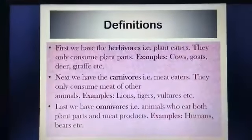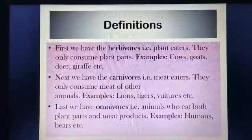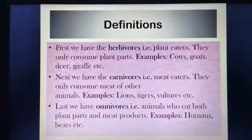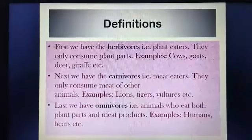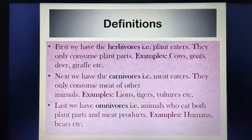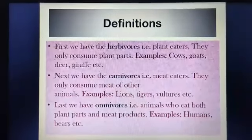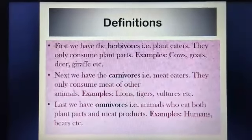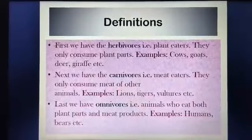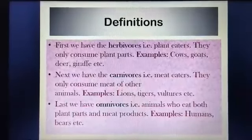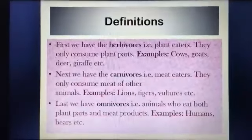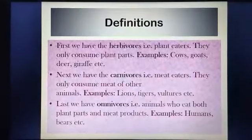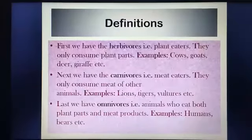Let us discuss about the definitions. First, we have herbivores, that is plant eaters. They only consume plant parts. Examples are cows, goats, deer, giraffe, etc.